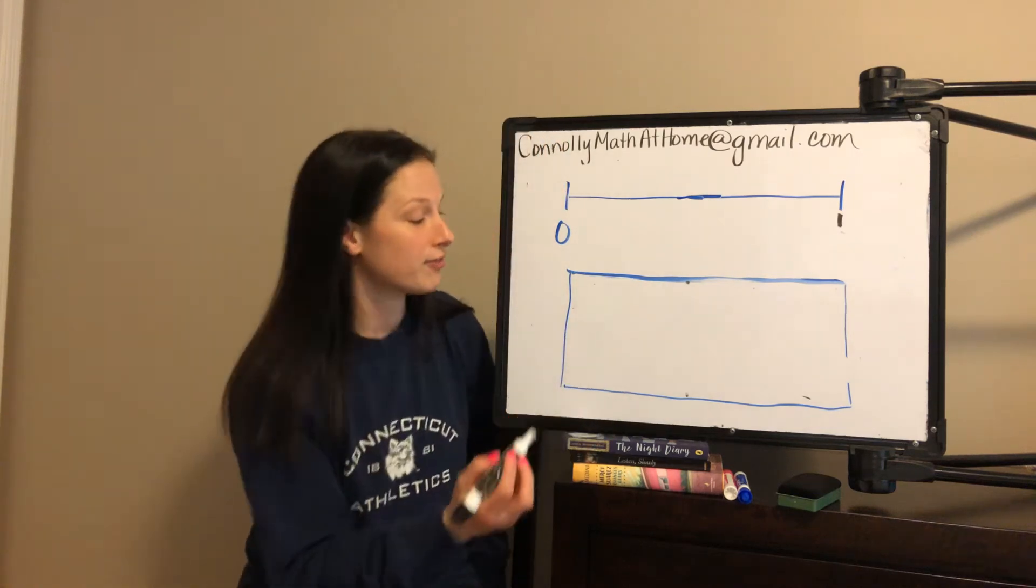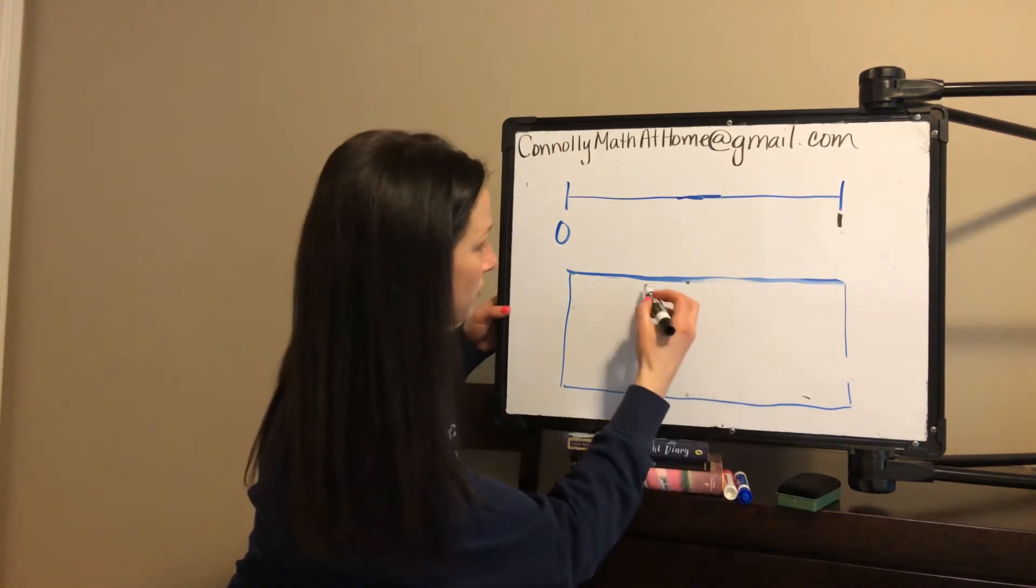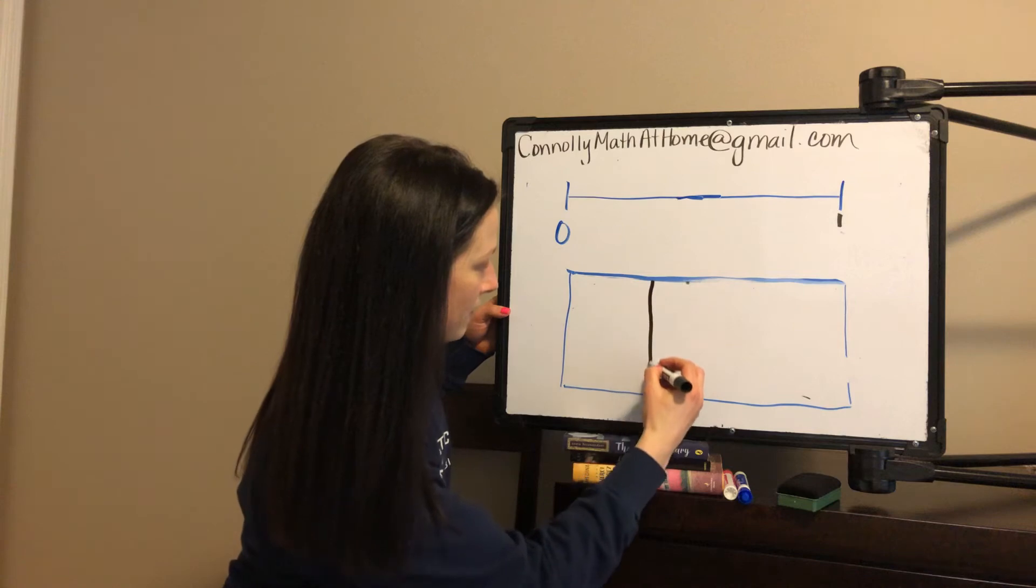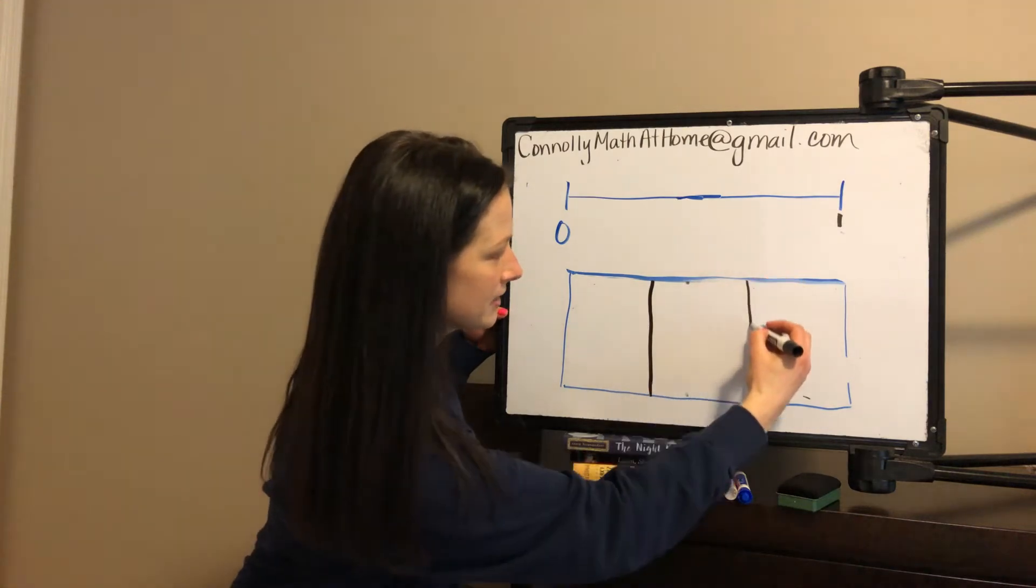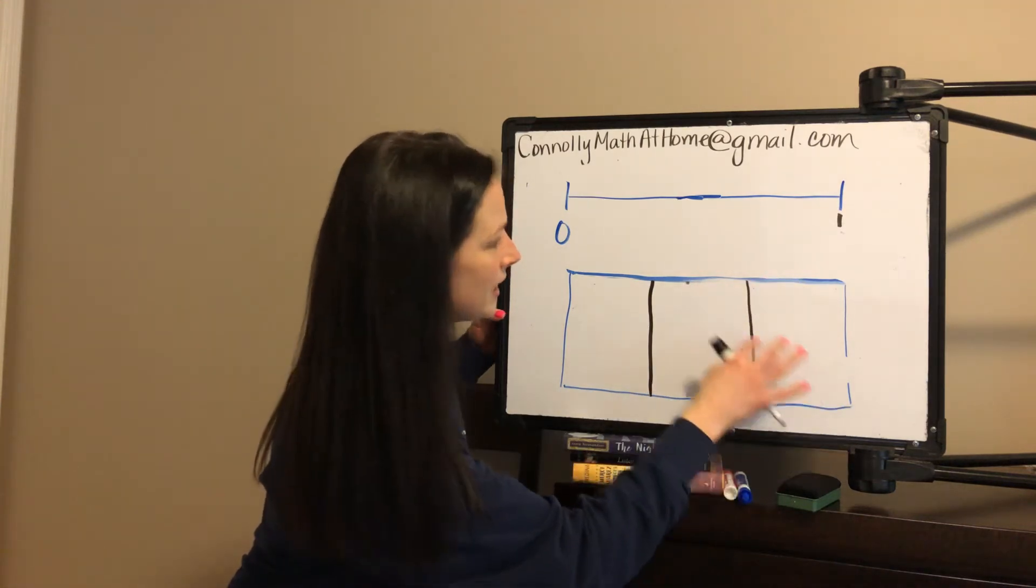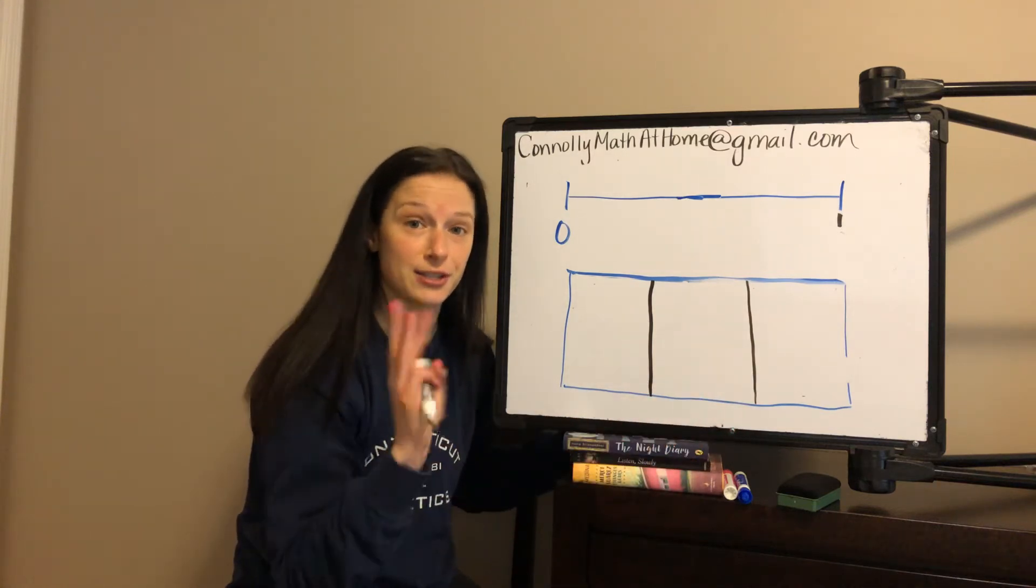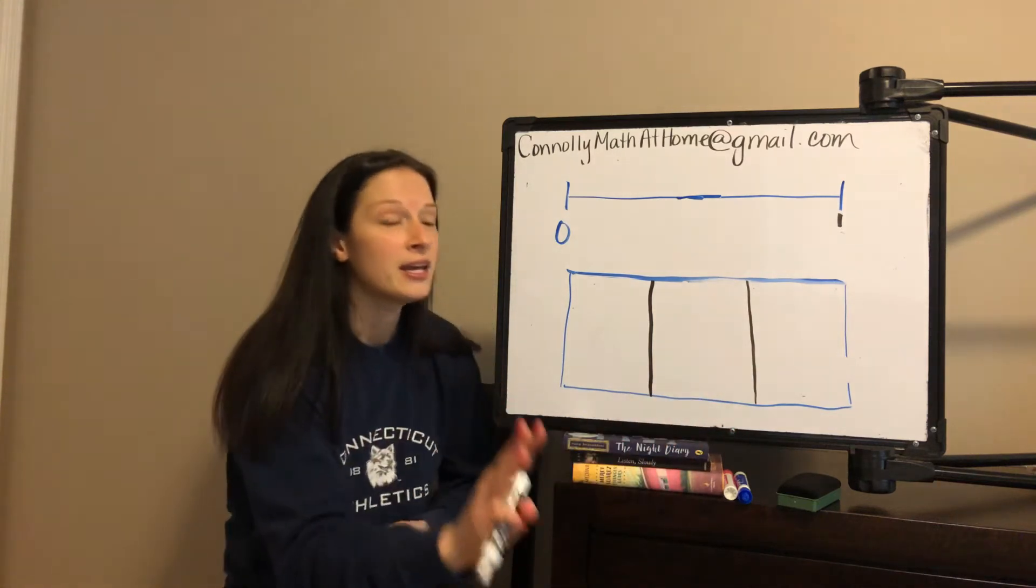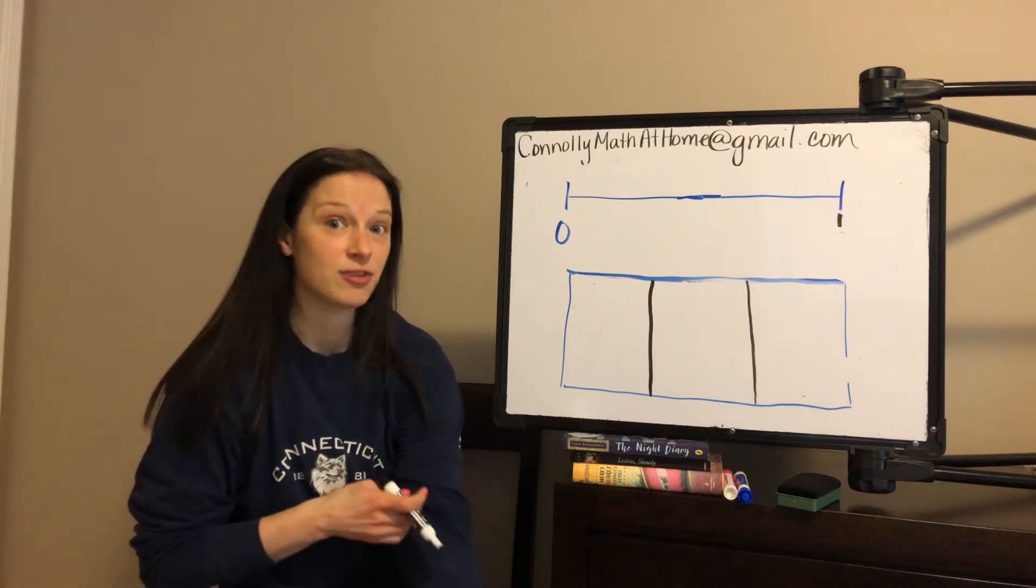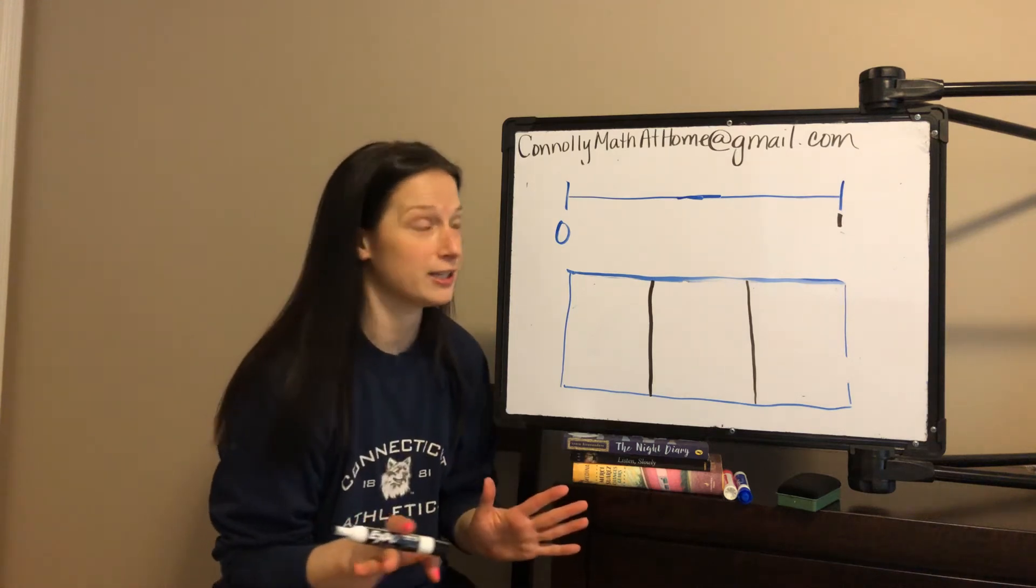Let's talk about thirds. If I was making three equal pieces on the area model, it might look like this. Remember, boys and girls, do the best that you can. As long as you're trying to make them equal, as long as you know what thirds is three, then we're happy. It is very difficult to draw perfectly equal pieces.